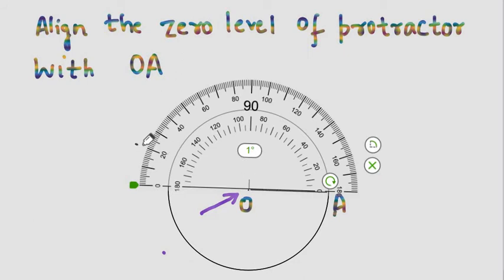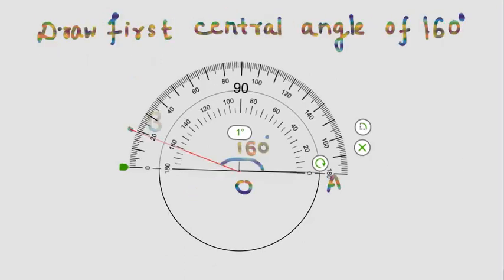So here we will have a marking. As you can see in the next slide, we have drawn an angle of 160 degrees with the help of the protractor.